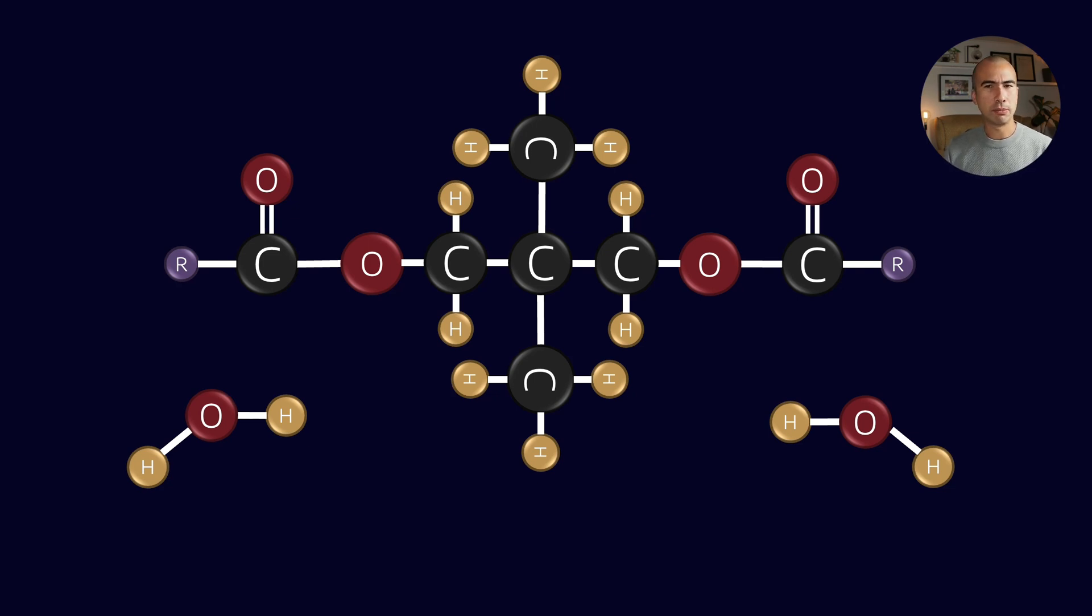One thing you'll notice immediately that is very different between a polyol ester and, let's say, the diesters we talked about in a previous video is that here the alcohol is in the middle and the acids reacted on the sides. That was the opposite of a diester, which was made of a diacid that sat in the middle with alcohols that reacted to it on the sides. And that gives it specific properties.